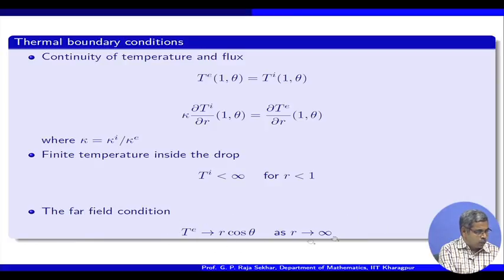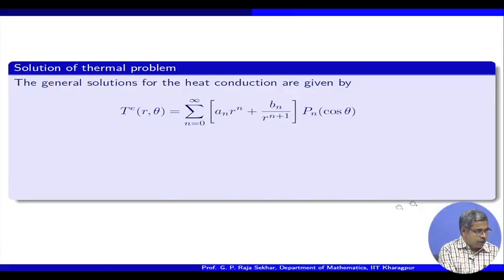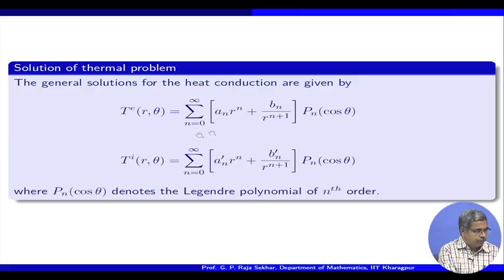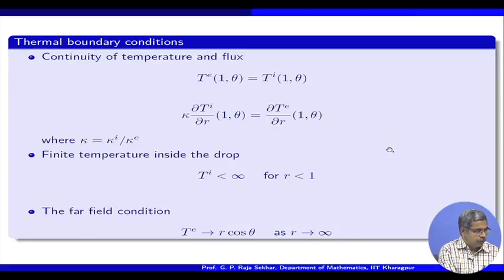We keep the case simple with the assumption that you have a far-field ambient temperature given as R cos theta — a uniform temperature. For the axisymmetric case, the solution to the Laplacian for interior and exterior can be written down easily. The coefficients for the exterior use one set and for the interior with primes, with these being the Legendre polynomials. We determine these coefficients using the boundedness condition in the interior, the far-field condition for the exterior, and matching the corresponding temperature and flux.